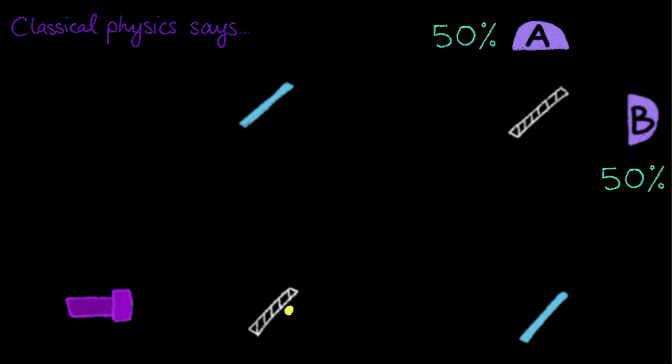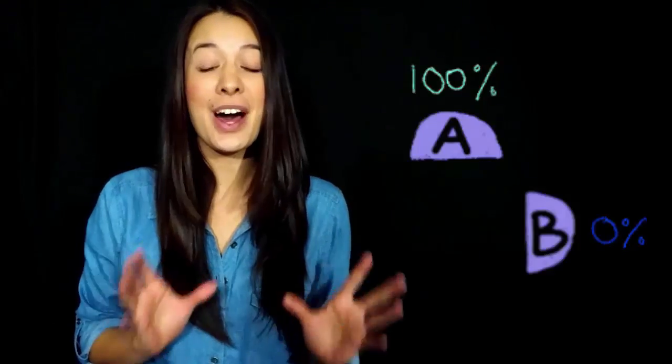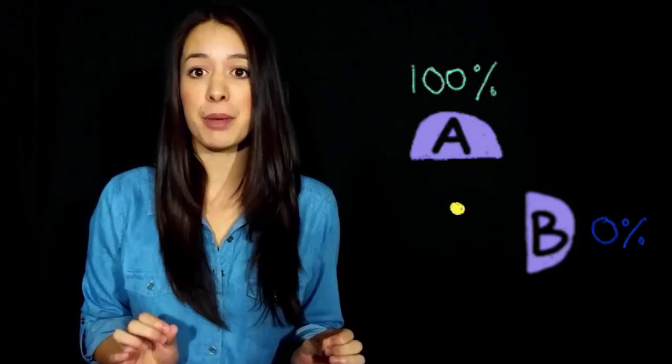I mean, I know we said that the light beams interfere constructively on A, but you need two objects to interfere with each other. So in the case of a single photon, it should show up on both detectors. But the results showed that 100% of the time the photon showed up on detector A, not a single photon was detected on B.